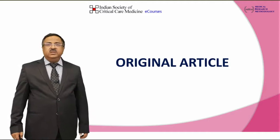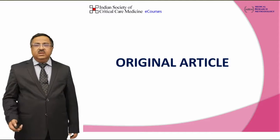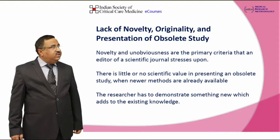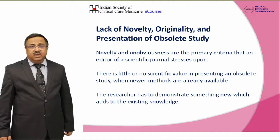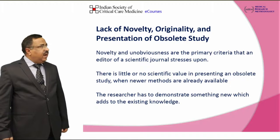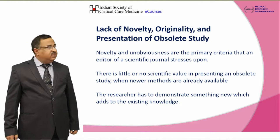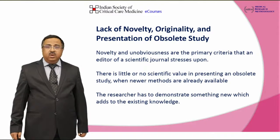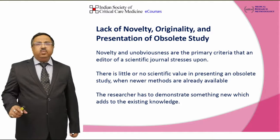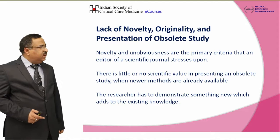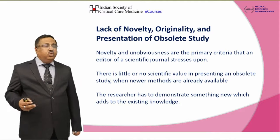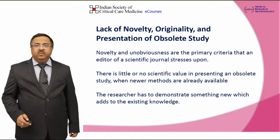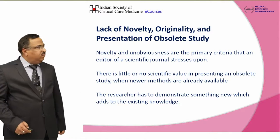First we will go through original articles — what are the common causes — and then we will see for review articles. Lack of novelty, originality, and presentation of obsolete study are key issues. Novelty and unobviousness are the two primary criteria that an editor of a scientific journal stresses upon. There has to be some new message and new add-ons to the existing knowledge, and then it becomes very obvious that your article will be accepted.